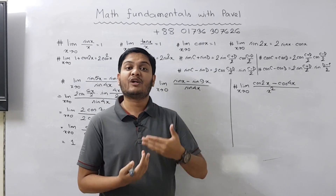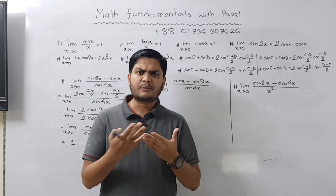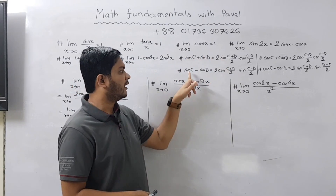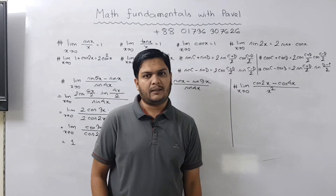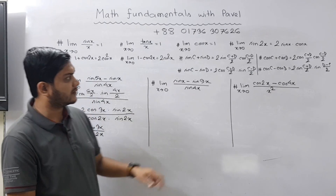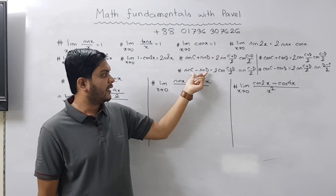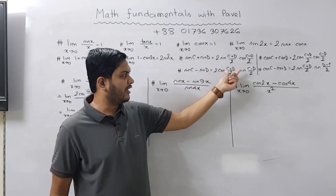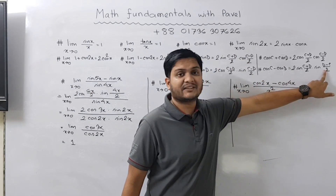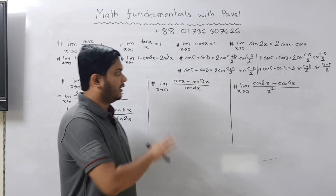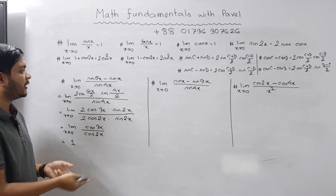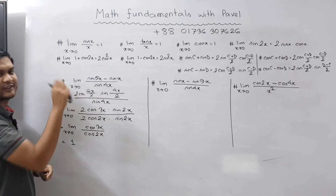To summarize the two memorization tips: first, when the formula involves sin C ± sin D, the two result terms are opposite (one sine, one cosine); second, plus means it starts with sine, minus means it starts with cosine (the opposite). The first term inside is always (C+D)/2 and the second term is (C−D)/2, except for cos C minus cos D, where the second term is (D−C)/2. That is the exception to remember.